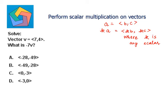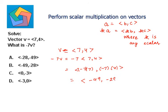So when we have vector v as 7 comma 4, negative 7v will be negative 7 times 7 comma 4, which will be equal to negative 7 times 7 comma negative 7 times 4, which equals negative 49 comma negative 28. This is the answer in part B.